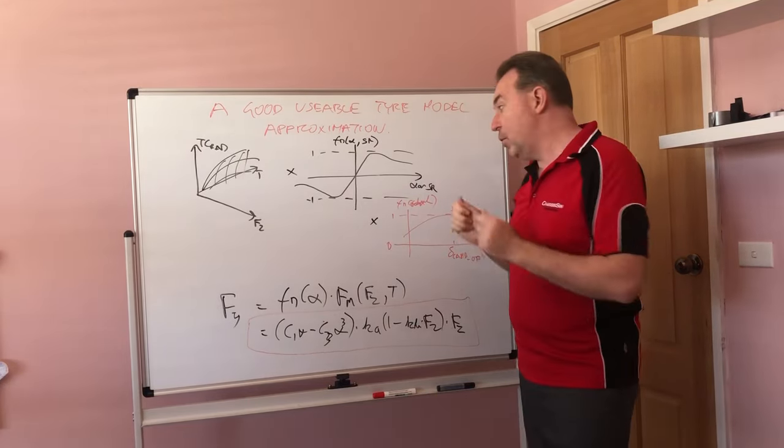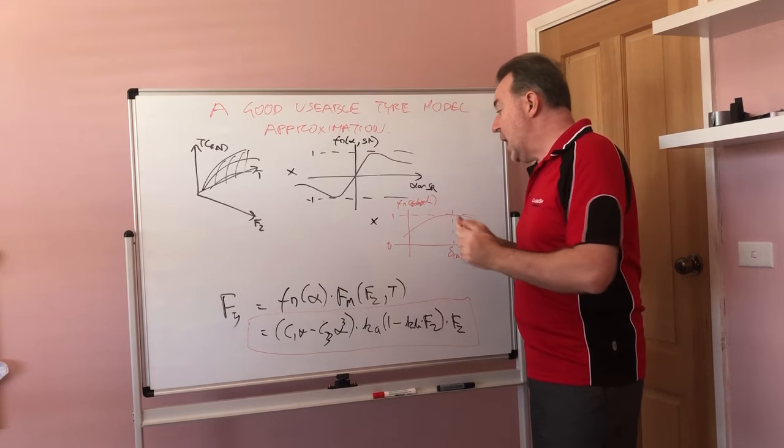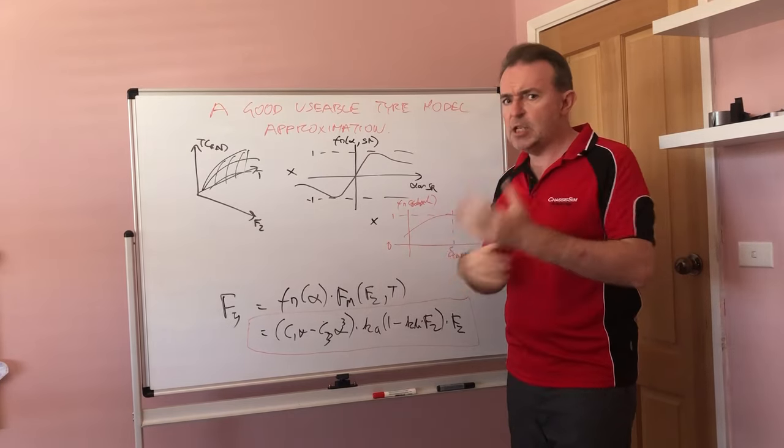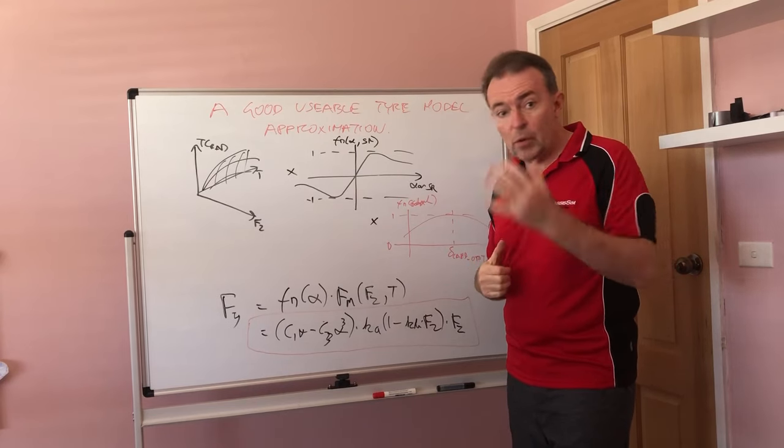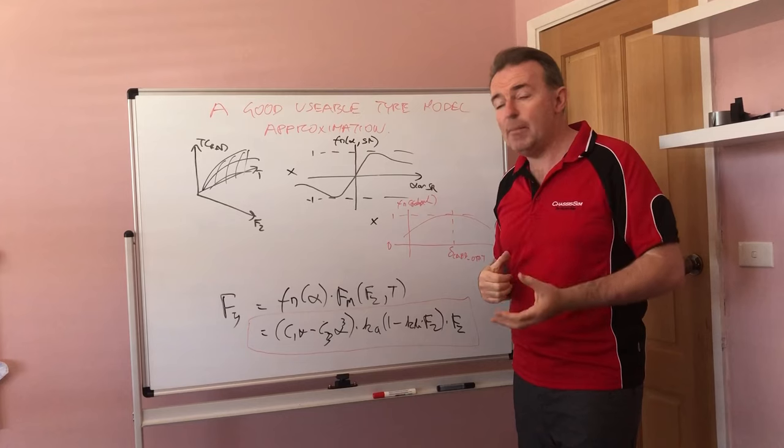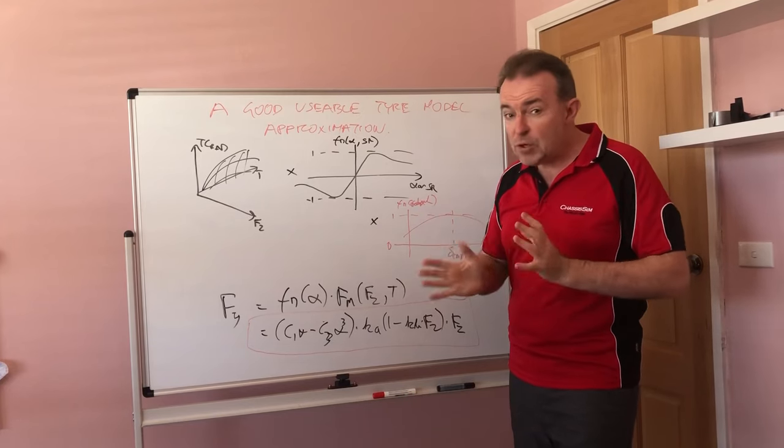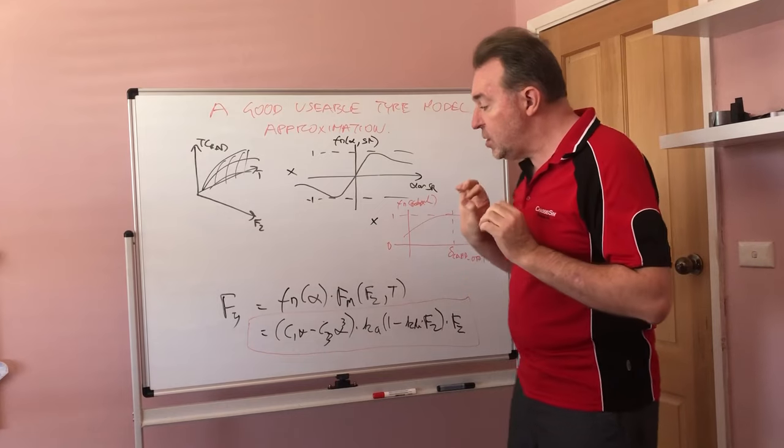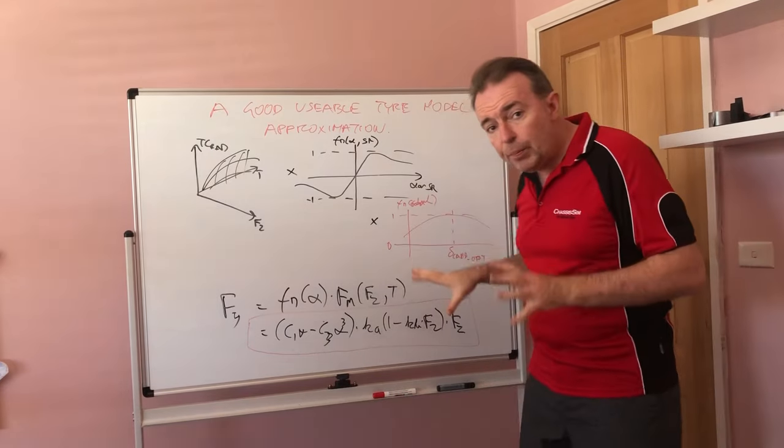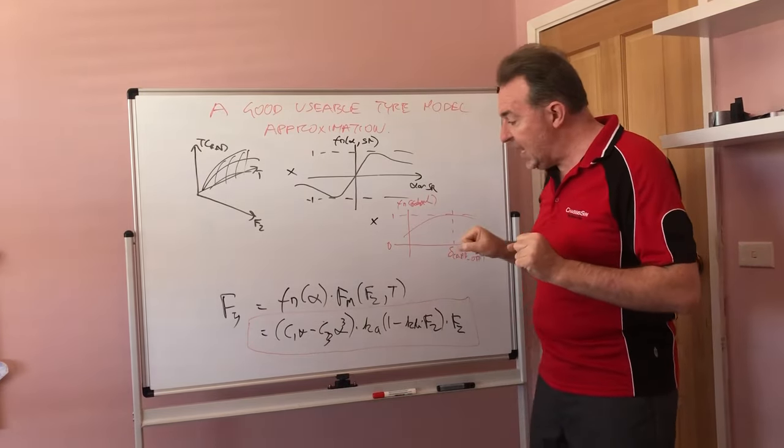Lastly, that is multiplied by the camber multiplier function. Here we've got the lateral case. Now if we were talking about the longitudinal case, it's sort of a different animal. This is one of the things that in the ChassisSim boot camps I go into great depth because there are a few traps there for young players.